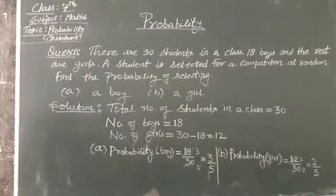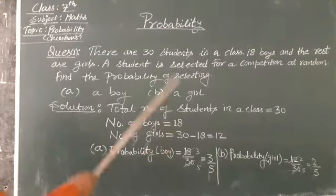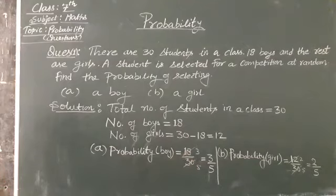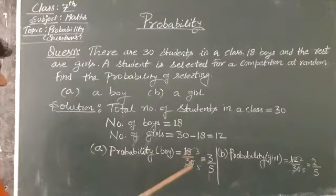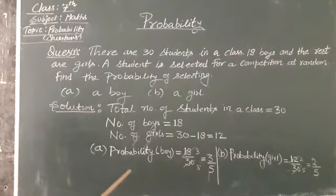Now, probability of getting a boy. Number of boys is 18 and total students is 30. So probability of getting a boy is 18 upon 30. On dividing 18 and 30 by 6, we get 3 by 5. So 3 by 5 is the required probability of getting a boy.